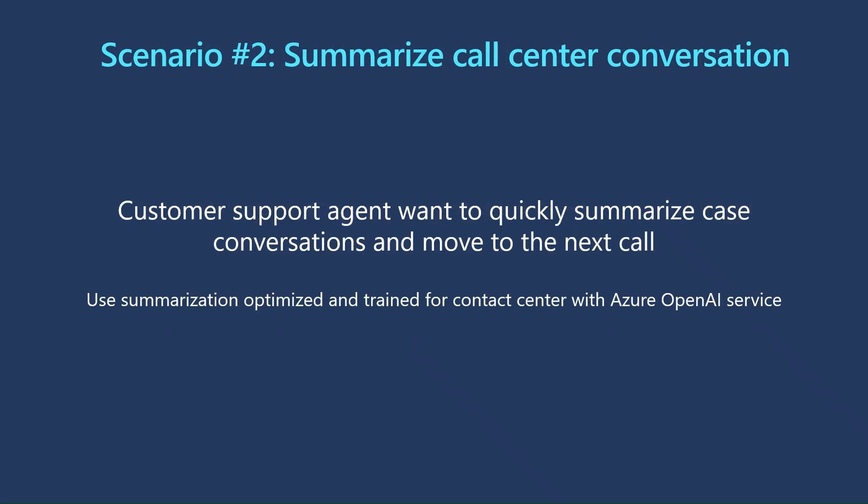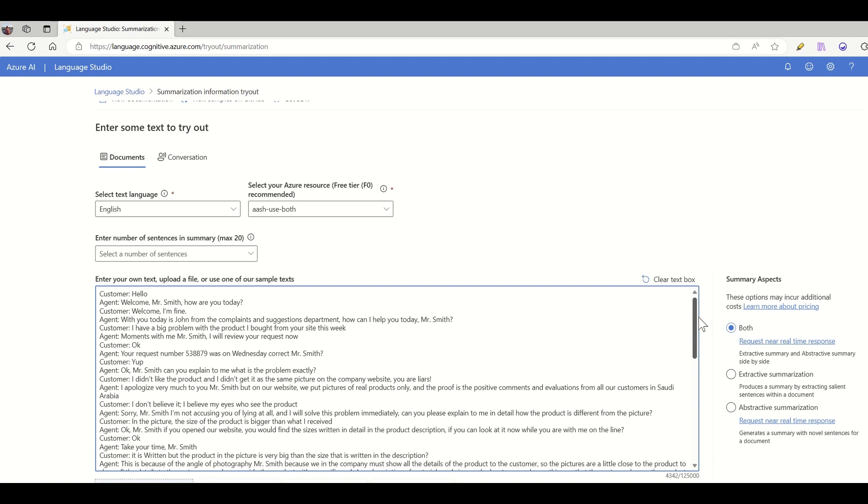Conversation summarization is specially tailored for conversational content. It provides useful conversational artifacts in addition to textual summarization that helps users navigate to relevant context in the conversation for more details. It supports four aspects: issue, resolution, chapter title, and narrative summarizations.